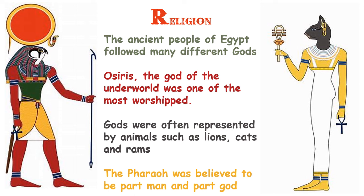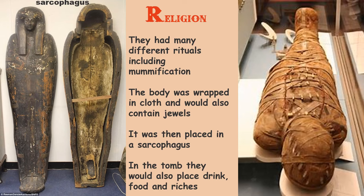The Pharaoh, who is the king of Egypt, was considered half man and half god while alive, and the Egyptians believed when he died he would become a full god. There were many rituals followed by the ancient people, and the most famous is mummification. The Egyptians were very advanced when it came to preserving the body — when someone died they would be wrapped in cloth, and jewels and other treasures would be added to the body. The body would be placed in what's called a sarcophagus, and in the tomb they would add food, drink, and riches.